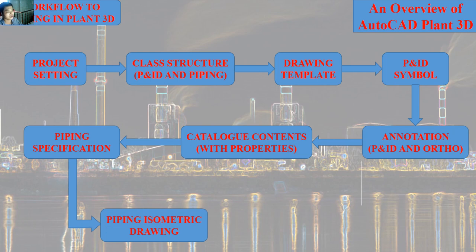I would like to share more about the catalog content. Catalog content is like the basic file with all of the library of parts we use in the model, such as pipes, tees, elbows, fittings, flanges, and gaskets.